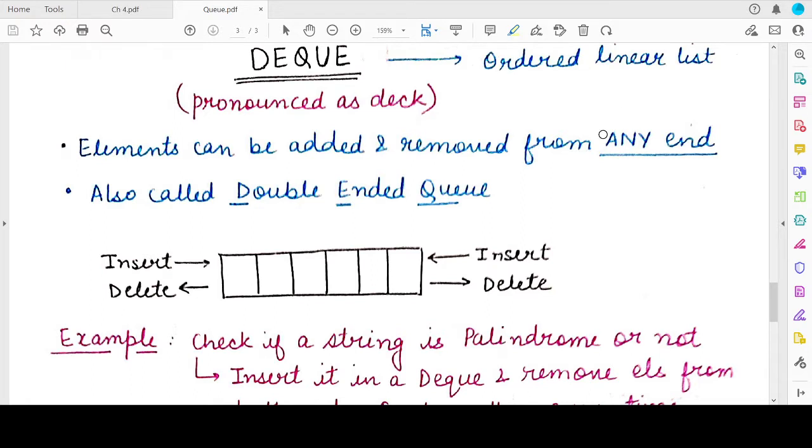we will study about a special type of queue which is also known as deque. The spelling is D-E-Q-U-E. It sounds similar to deck, but it is actually the full form for double-ended queue. Now what do we mean by double-ended queue? A double-ended queue is a linear data structure but it has a unique property that the elements in the deque can be added and removed from any end.